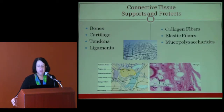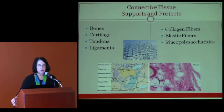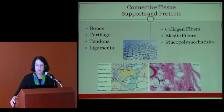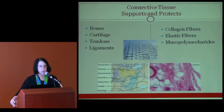We think of connective tissue as the scaffolding of the human body. It includes the bones, cartilage, tendons, and ligaments that hold all of us together. The molecular components are the collagen fibers, elastic fibers, and mucopolysaccharides that form what's been called in pathology the ground substance.